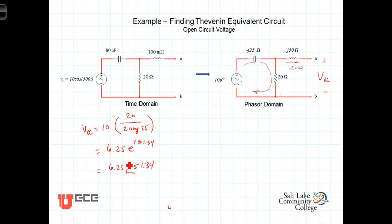But whatever form we choose, we now have our Thevenin equivalent voltage because the Thevenin equivalent voltage is simply equal to the open circuit voltage, which in this case is 6.25 angle 51.34 degrees. In the next video, we'll demonstrate the three different methods of determining the Thevenin equivalent impedance.